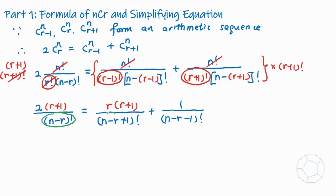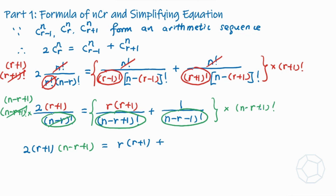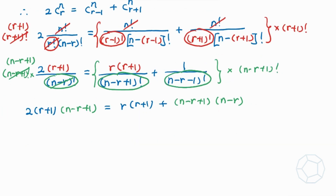Next, we look at the three denominators. We multiply both sides by n minus r plus 1 factorial — the largest of the three — to clear all fractions. The left-hand side becomes 2 times r plus 1 times n minus r plus 1. On the right-hand side, the first term gives r times r plus 1, and the second term gives n minus r plus 1 times n minus r.